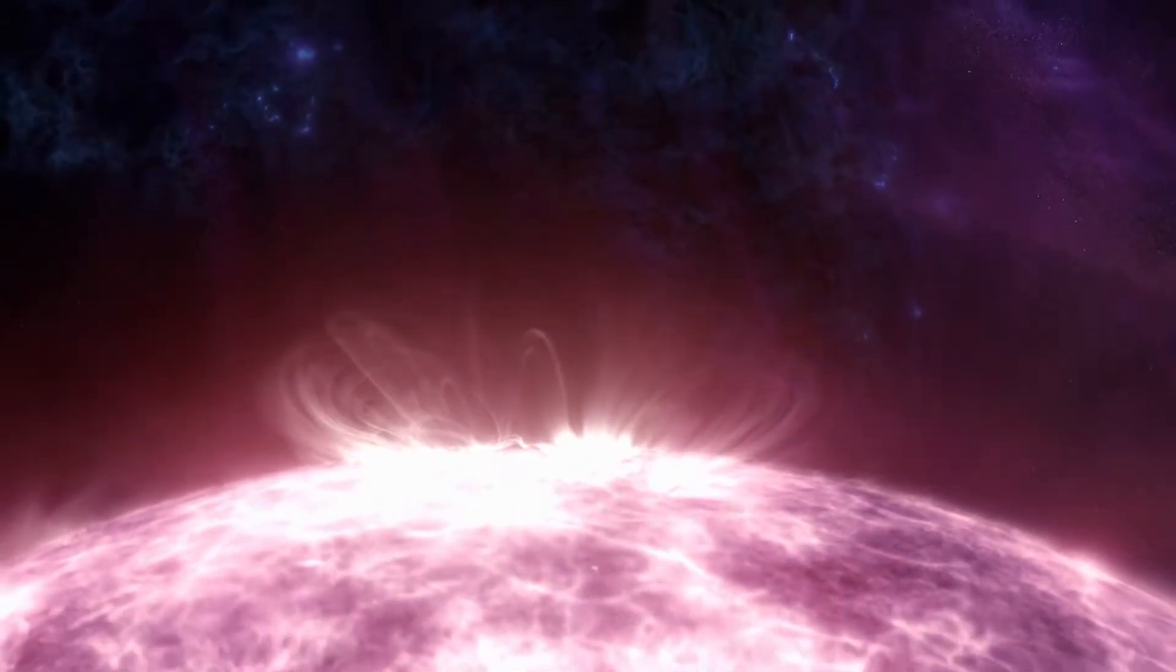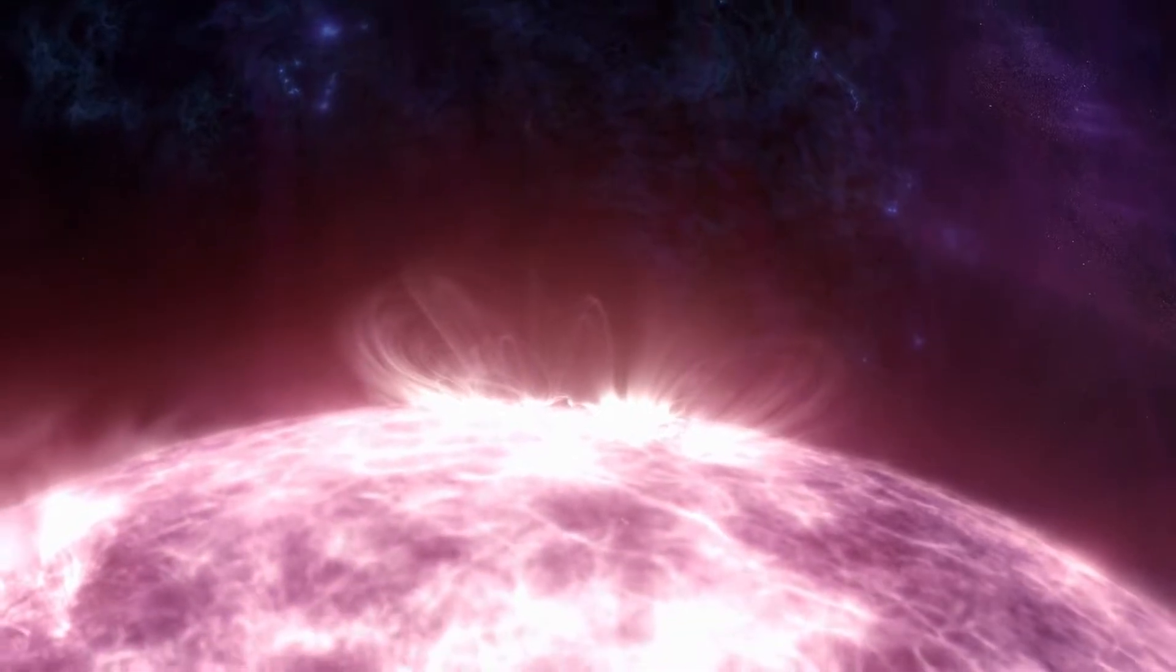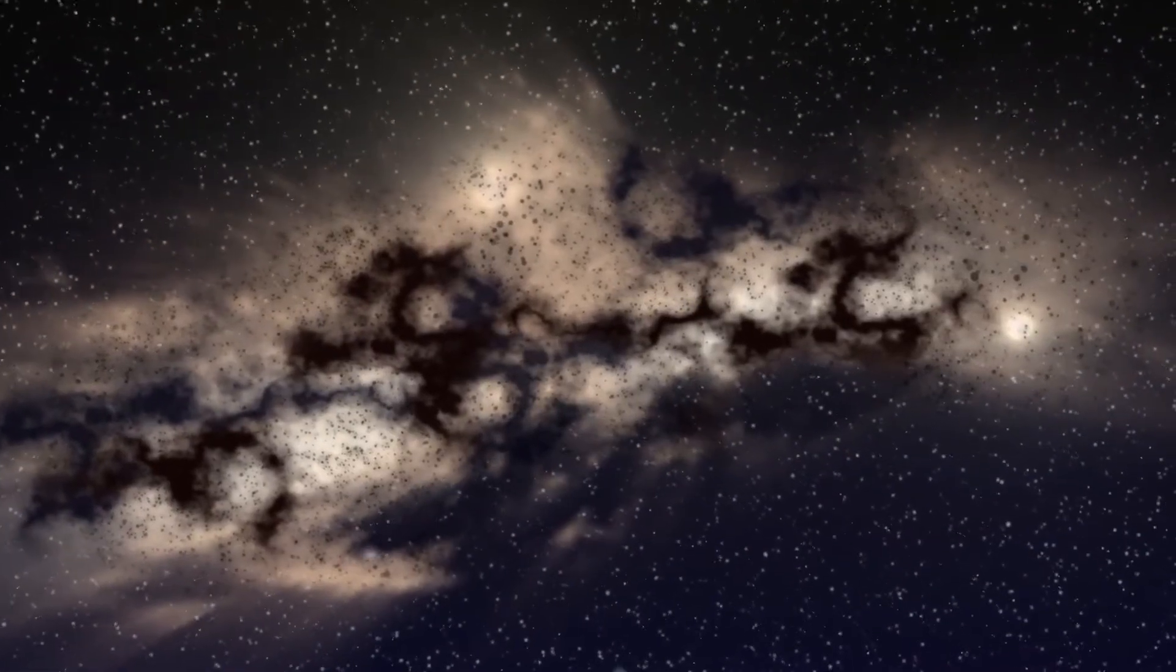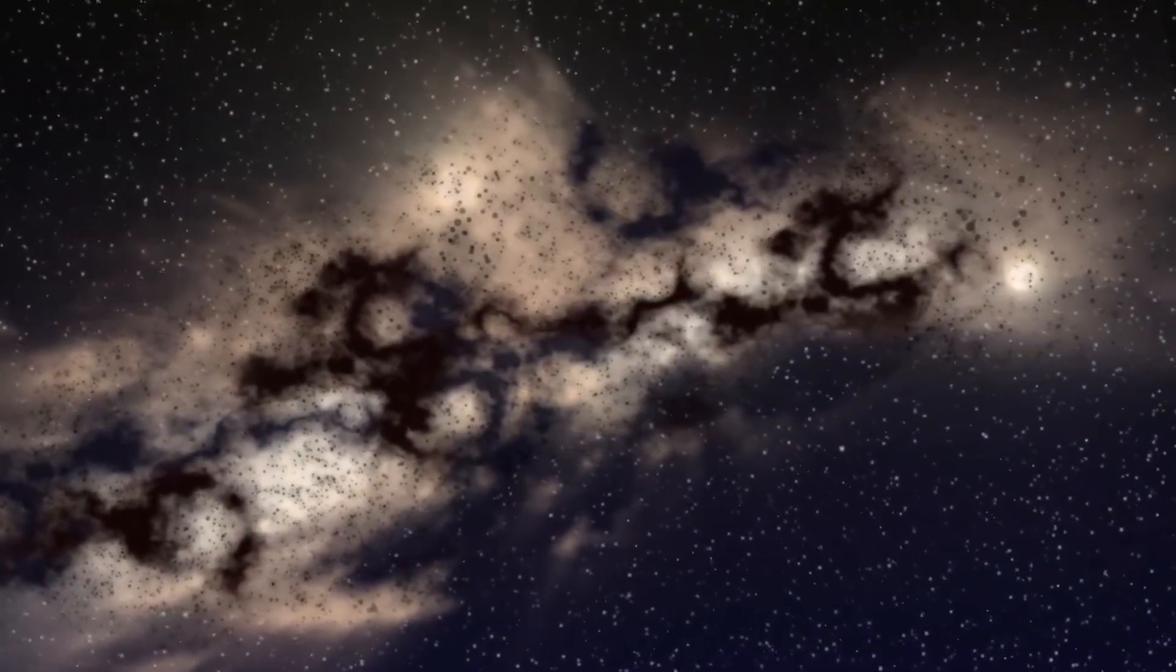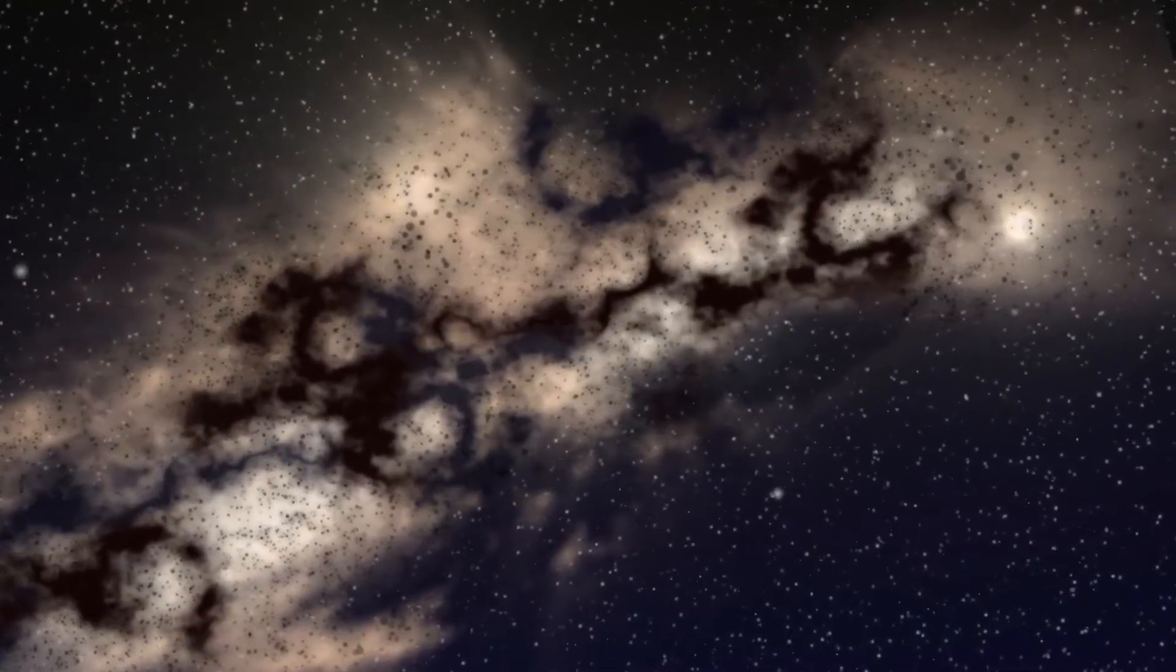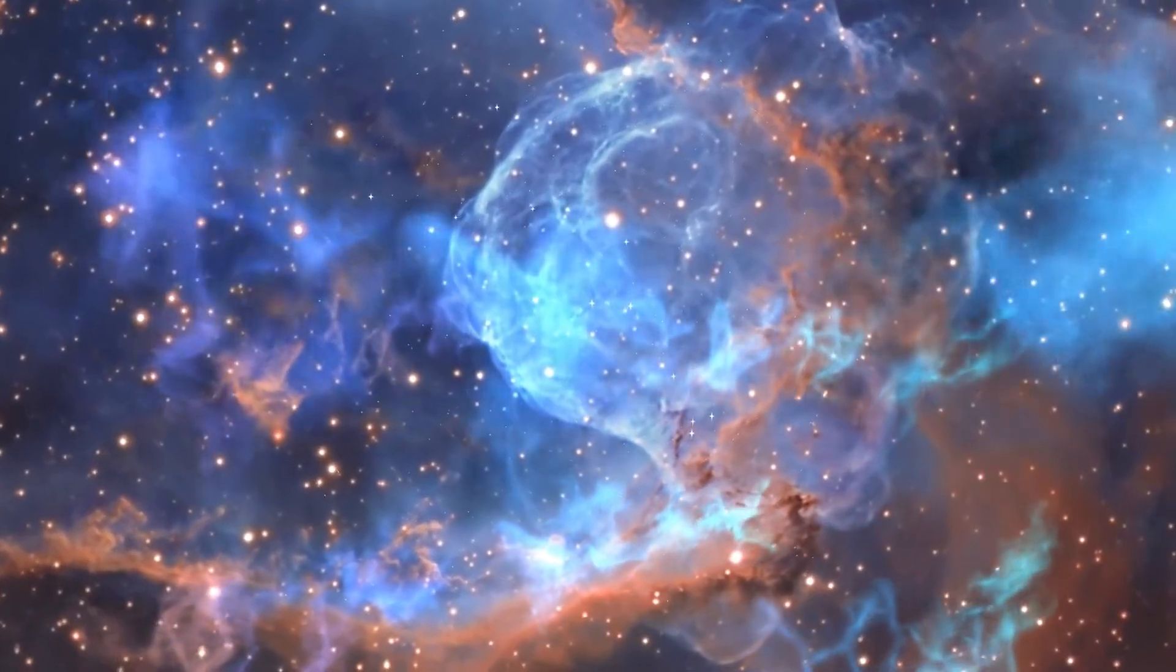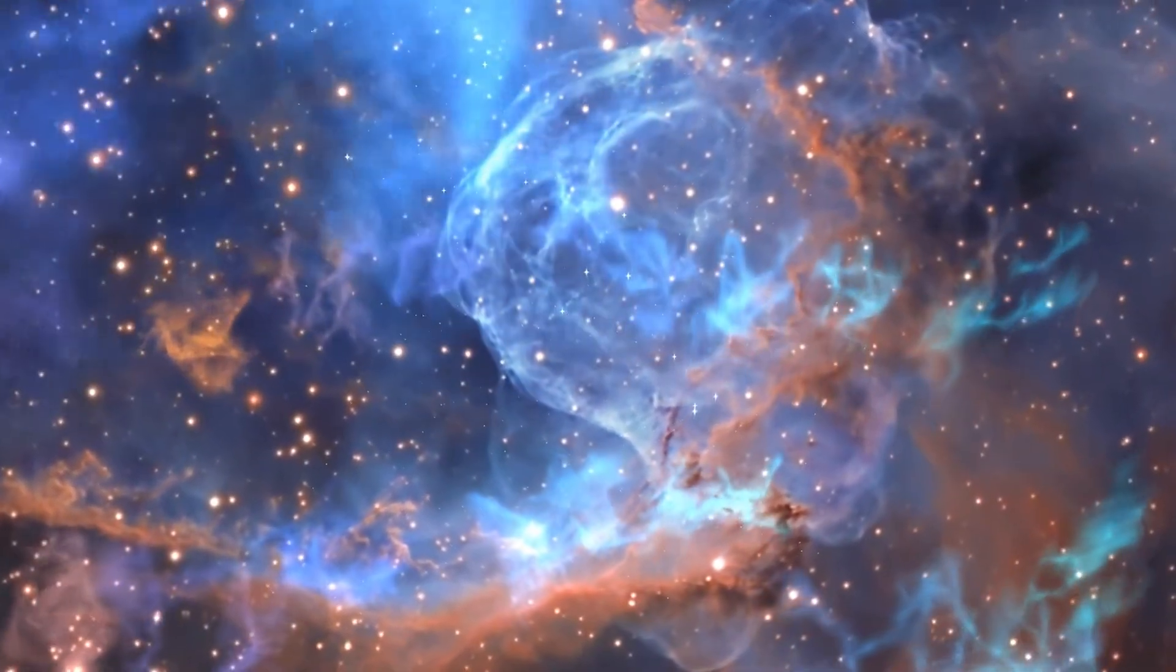What revelations are they uncovering about the supermassive black hole at the heart of the Milky Way? From a distant vantage point, our Milky Way galaxy appears as a flat spiral, adorned with expansive arcs of gas, dust, and approximately 200 billion stars orbiting within.